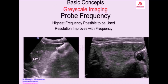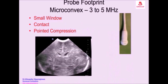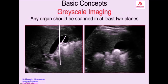If you use a high-frequency probe, the probes have a footprint — a pointed footprint. The major advantage of this probe is you can apply a pointed compression so that you displace the gas at that cross-section level. You can see that it is not a calculus; it is actually gas in the adjacent duodenum or colon which is causing the artifact.